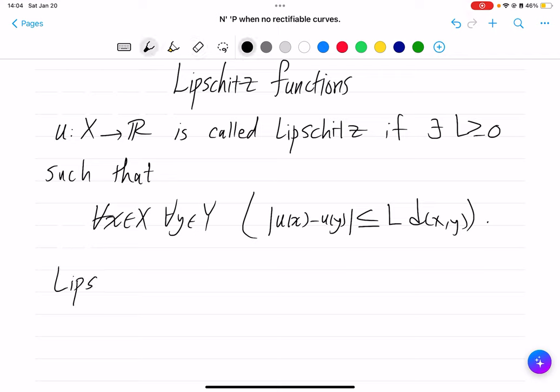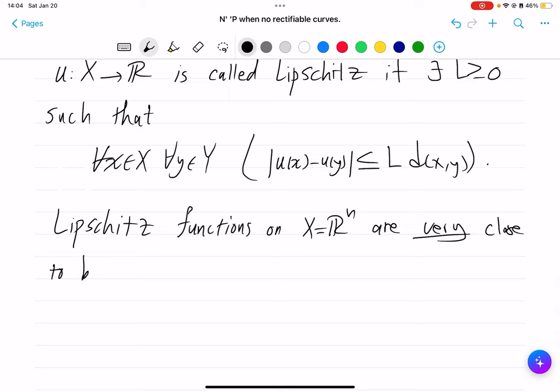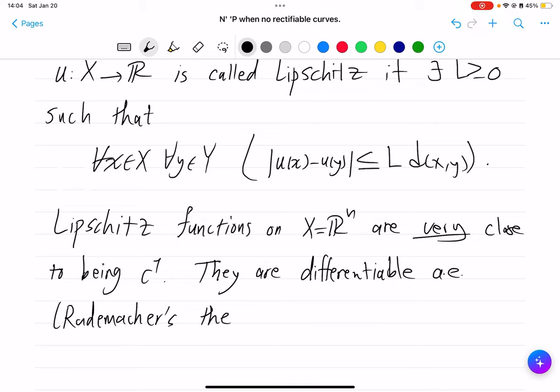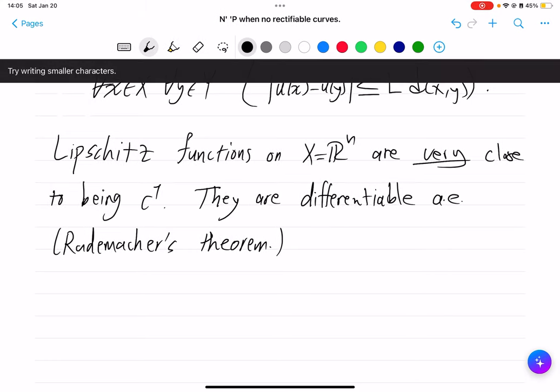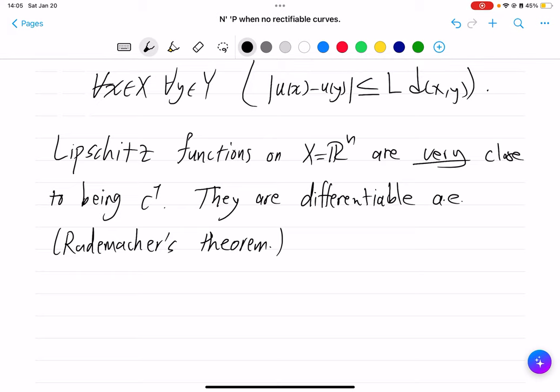There are many reasons why Lipschitz functions are nice. One thing is for simplicity, but also Lipschitz functions on Euclidean spaces are very close to being smooth, to being C1. They are differentiable almost everywhere, which is the famous Rademacher theorem, and with that derivative we can do basically what we can do with C1 functions.